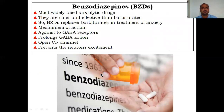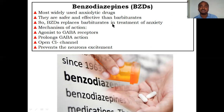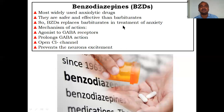Benzodiazepines are the first-class, number-one drugs — most widely used anxiolytic drugs. They are safer and more effective than barbiturates, which is why benzodiazepines are preferred. Benzodiazepines replace barbiturates in the treatment of anxiety, making them the first choice.